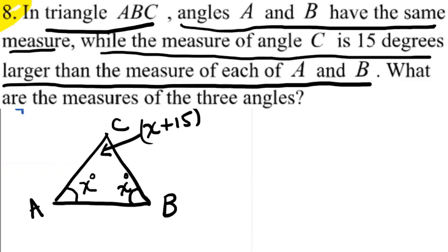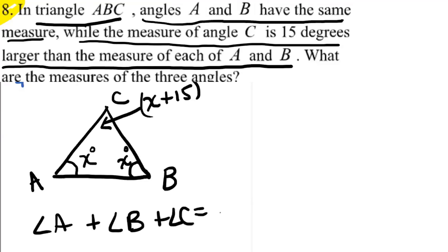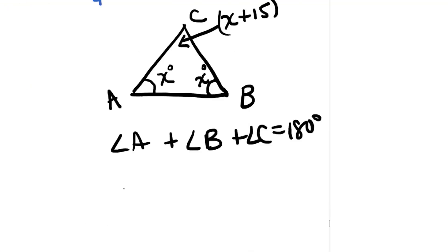From there, the problem is the same — you just had to set up the diagram yourself. We look at the diagram: it's a triangle focused on interior angles. What do we know about the interior angles of a triangle? They add up to 180. So: angle A plus angle B plus angle C equals 180 degrees. In this case that means x plus x plus x plus 15 equals 180.